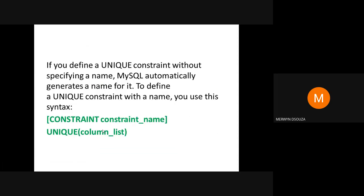If you define a unique constraint without specifying a name, MySQL automatically generates a name for it. To define a unique constraint with a name, use the CONSTRAINT keyword followed by the constraint name, then the UNIQUE keyword, and specify within parentheses the list of columns separated by commas.